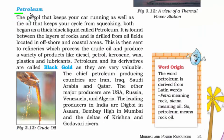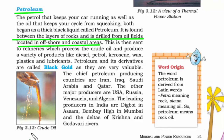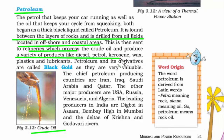Petroleum is found between the layers of rocks and is drilled from oil fields located in offshore and coastal areas. We always first extract crude oil, and after processing in refineries, we produce a variety of products like diesel, petrol, kerosene, wax, plastics, and lubricants. Petrol is also called black gold because it is very valuable.